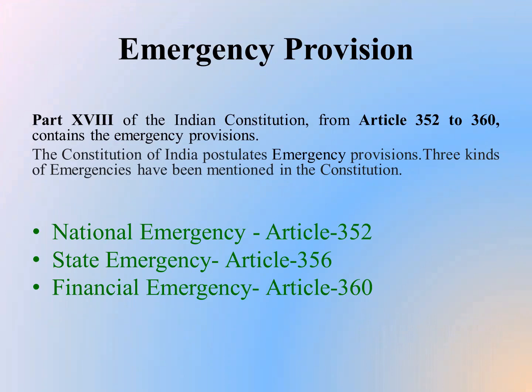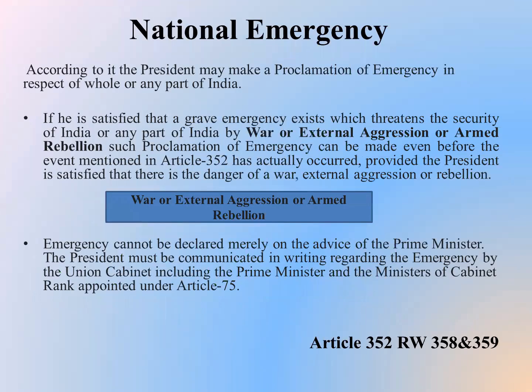As we all know, emergency provisions are postulated under Part 18 of the Indian Constitution, from Article number 352 to 360. The Constitution of India postulates emergency provisions, and there are three kinds of emergency mentioned in the Indian Constitution. First is national emergency under Article 352, state emergency under Article 356, and financial emergency under Article 360.